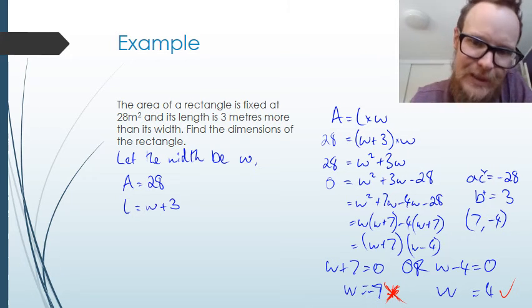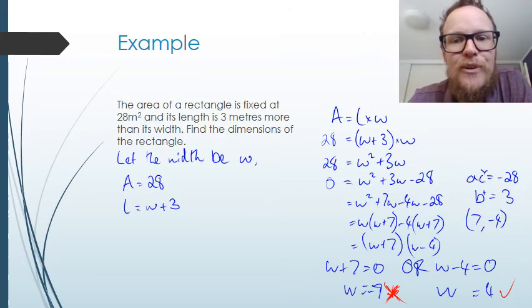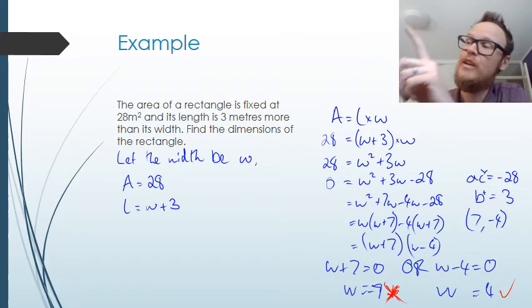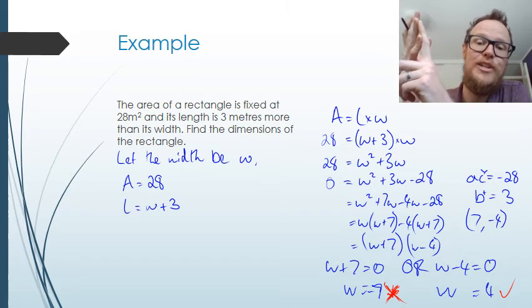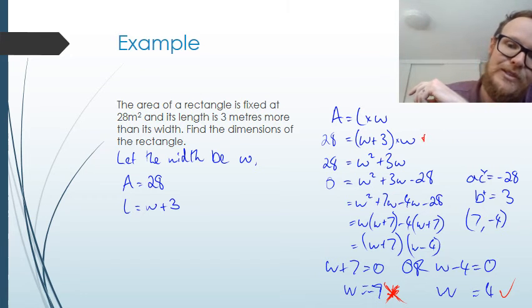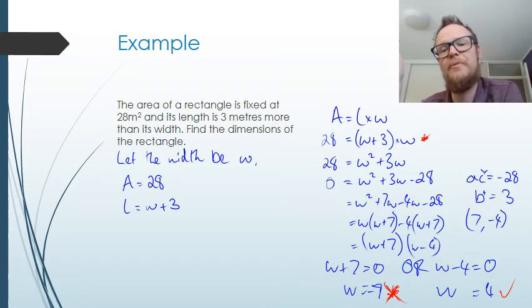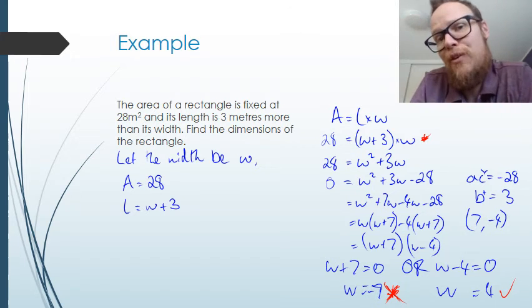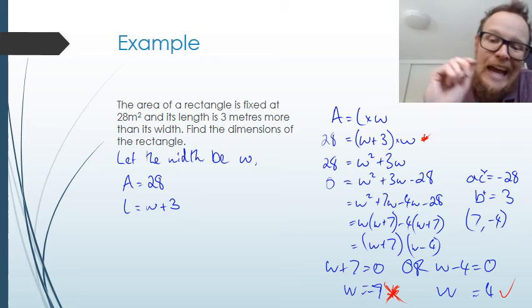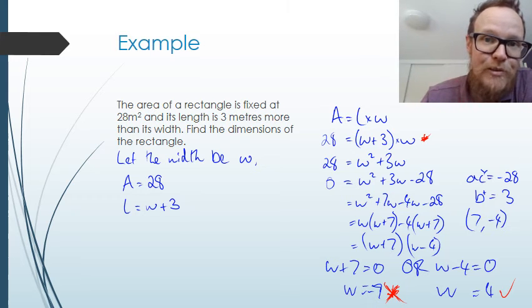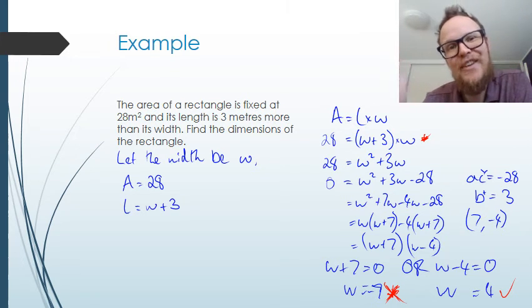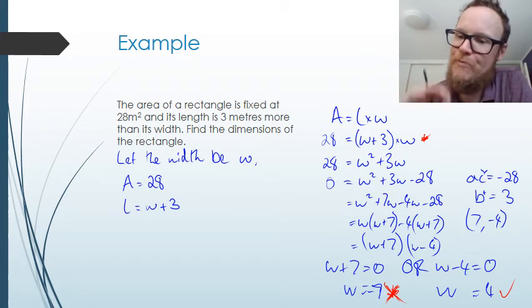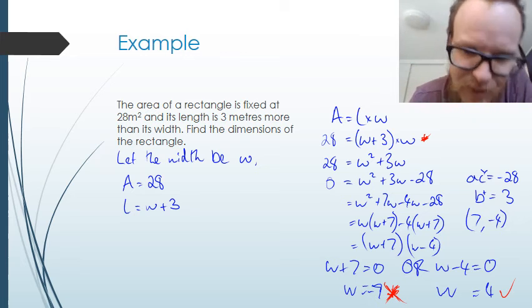So we now have almost solved the question. We've almost answered the question. We need to write one final thing though. We've certainly defined the variable. We've written an equation involving the variable. Here it is. Here's the equation involving the variable. We've then solved that equation using our understanding of the magic that is solving quadratic equations. And we've also then checked our answer. We've checked and said negative 7. No. Don't believe it. Positive 4. Magnifique. Perfect. So the width is 4 meters.